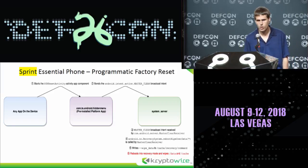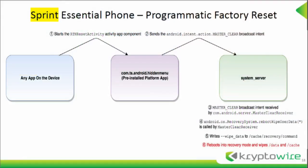This is the workflow to do it on the Essential Phone. Any application on the device with no permissions starts an activity — RT reset activity — in a pre-installed platform app which is very privileged. That activity then starts another activity which sends the master clear broadcast intent. This is received by the system server process. The master clear receiver calls an internal API class, RecoverySystem, in a method called rebootWipeUserData. At this point it writes '--wipe_data' as well as a few things to a file on the cache partition called 'cache/recovery/command', then reboots into recovery mode and wipes the data and cache partitions.